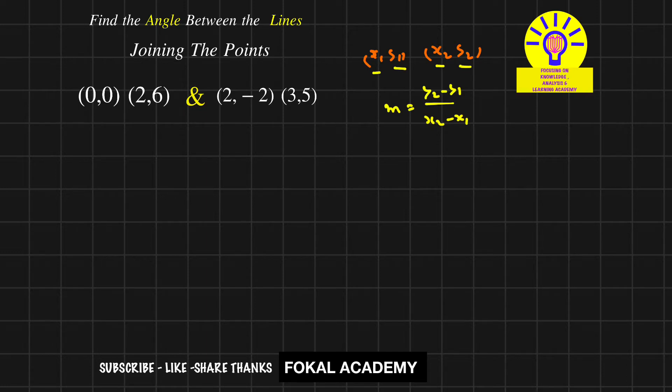Now from these two points, the slope for this line is m1 = (6 - 0)/(2 - 0) = 3. Similarly, find the slope for these two points.